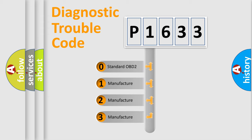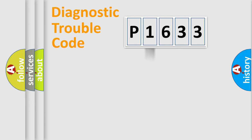If the second character is expressed as zero, it is a standardized error. In the case of numbers 1, 2, 3, it is a manufacturer-specific expression of the car-specific error.